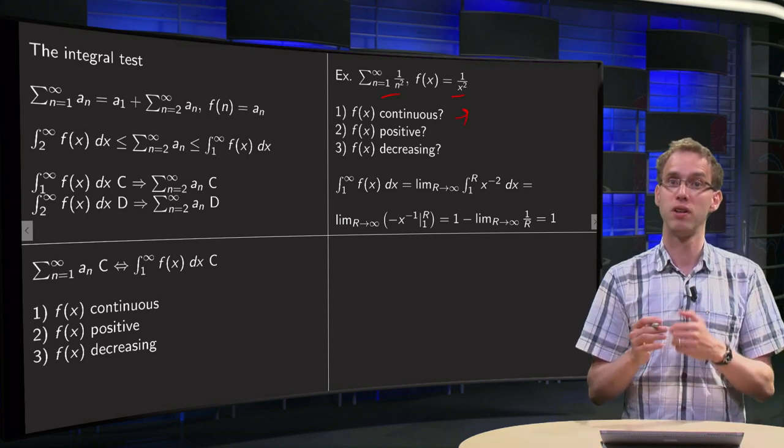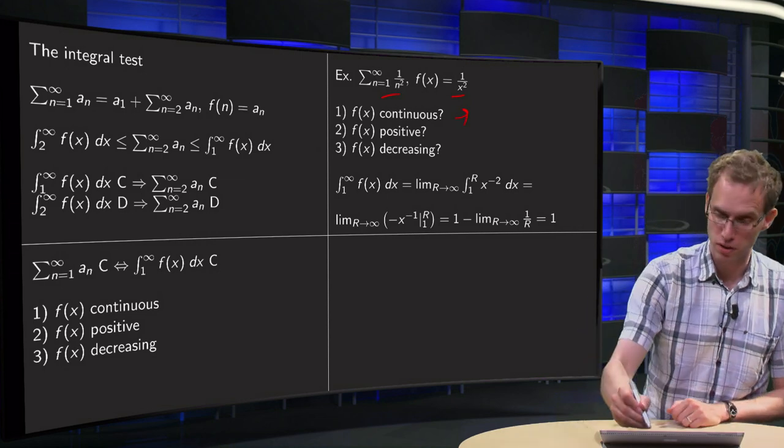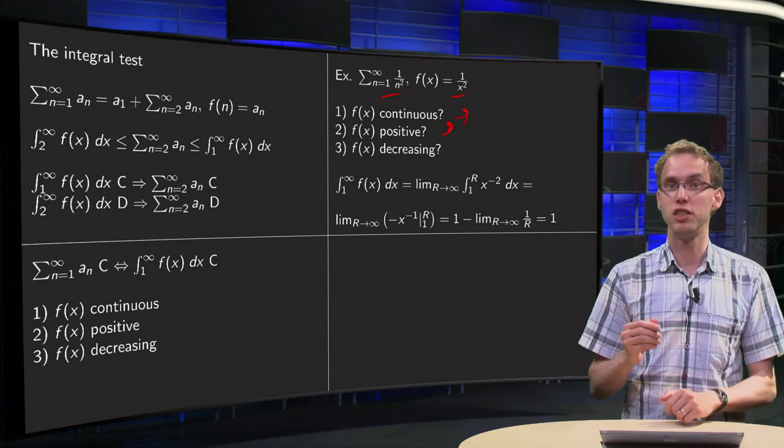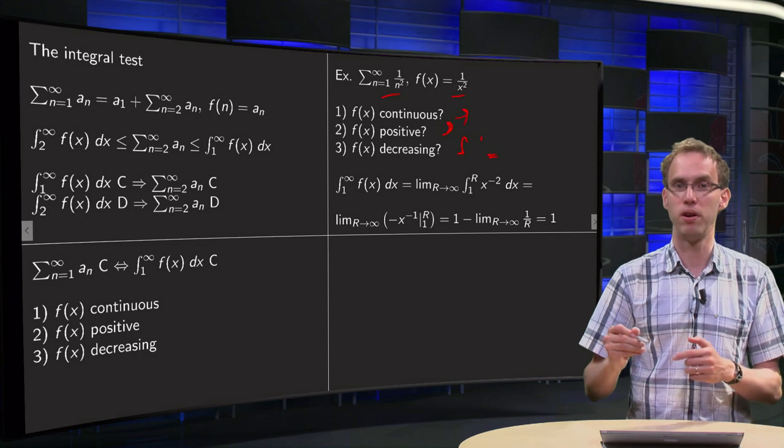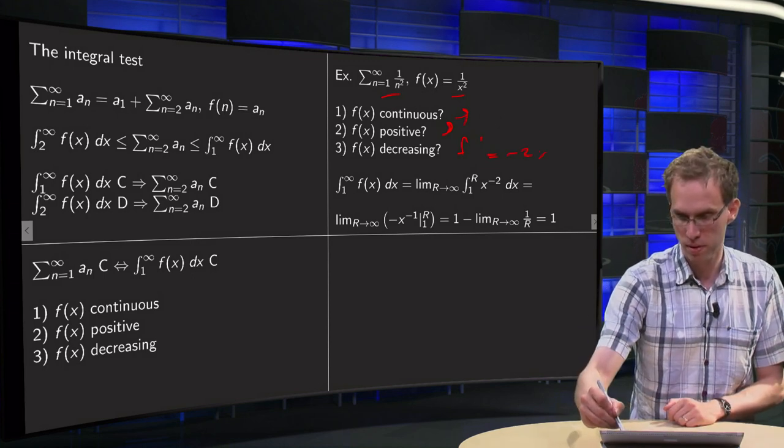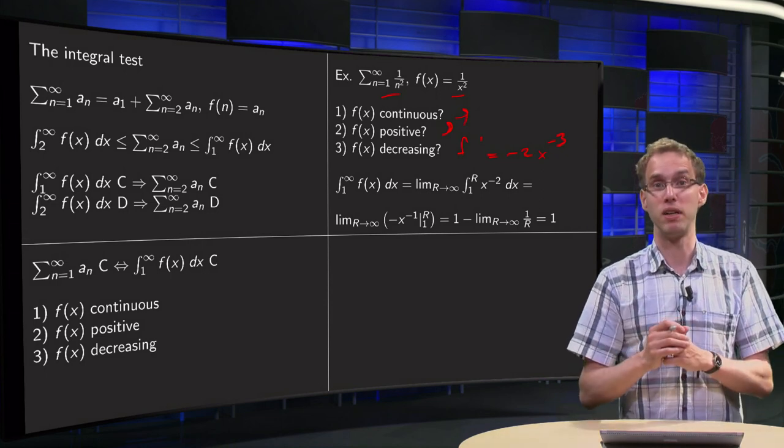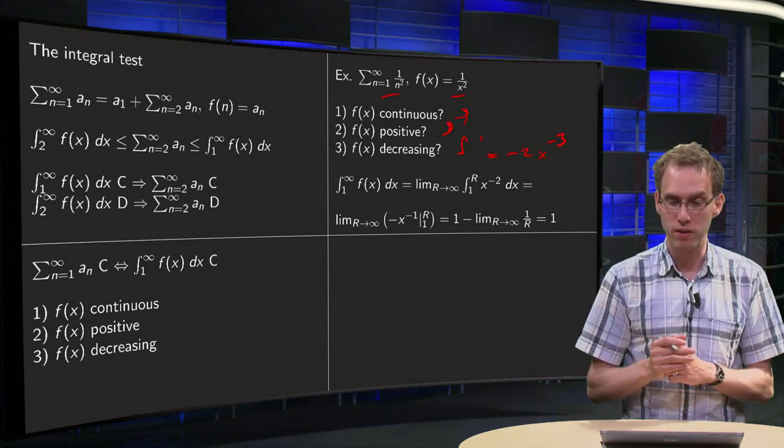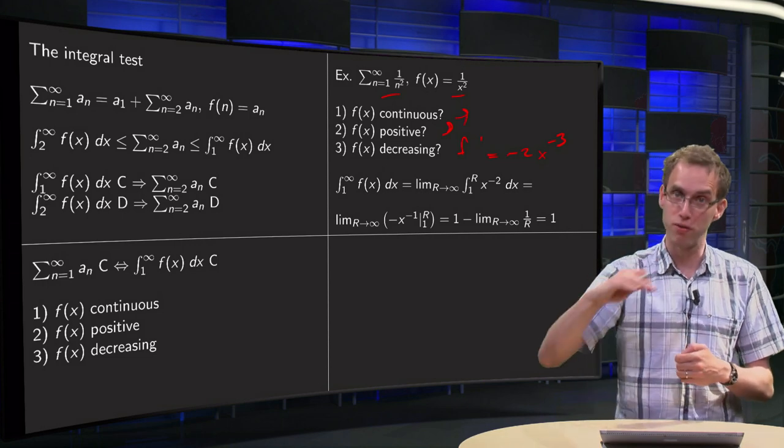Is f(x) positive? Well, x squared is positive, so 1 over x squared is positive, so that's fine. Decreasing part, usually easiest is to compute f prime. f prime in this case equals x to the power minus 2, so minus 2x to the power minus 3. x is always bigger or equal than 1, so x to the power minus 3 is positive, multiplied by the minus 2 is always negative, so f prime is negative, which means that our function is decreasing, and we can apply the integral test.